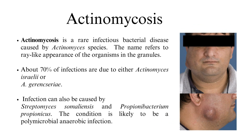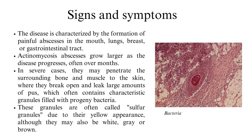Actinomycosis is a rare infectious bacterial disease caused by Actinomyces species. The name refers to the ray-like appearance of the organisms in the granules. About 70% of infections are due to Actinomyces israelii. Infection can also be caused by Streptomyces somaliensis and Propionibacterium propionicus. The condition is likely to be a polymicrobial anaerobic infection.